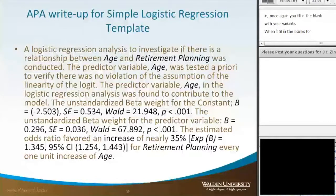When I fill in the blanks for my fictitious data, it now reads: A logistic regression analysis to investigate if there is a relationship between age and retirement planning was conducted. The predictor variable age was tested a priori to verify there was no violation of the assumption of the linearity of the logit.